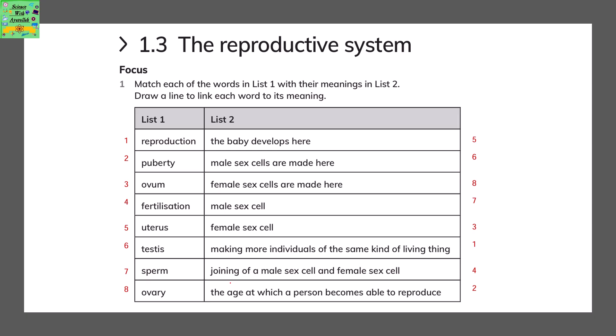Ovum is the female sex cell. Fertilization is the joining of a male sex cell and a female sex cell. Uterus is where the baby develops.